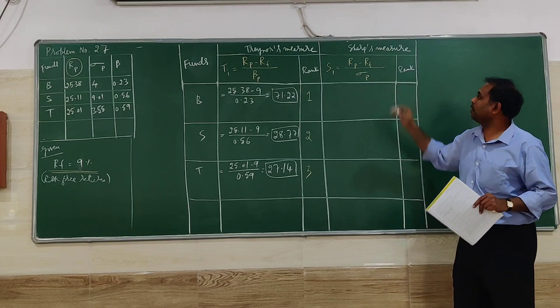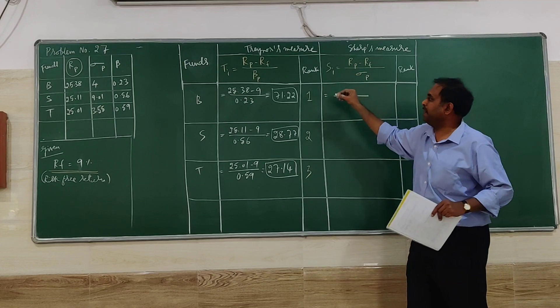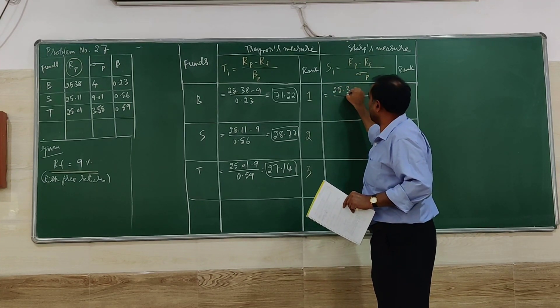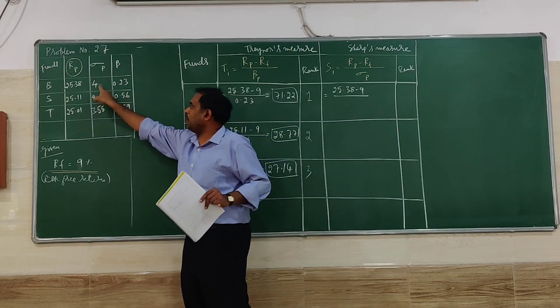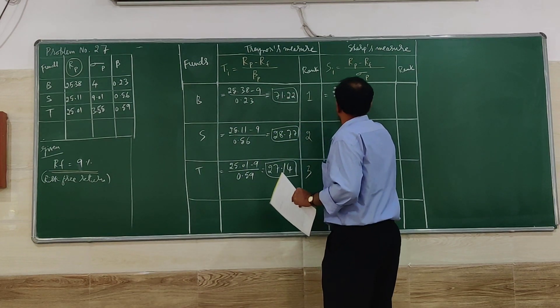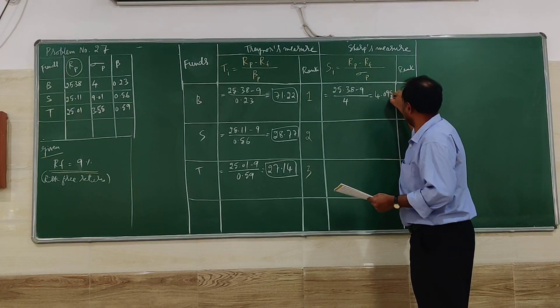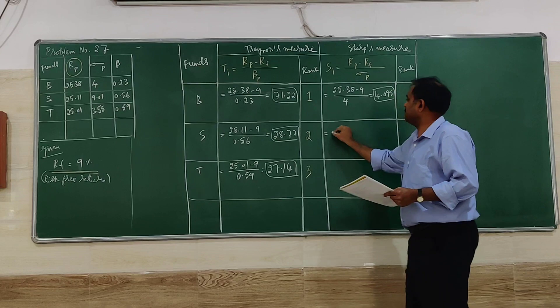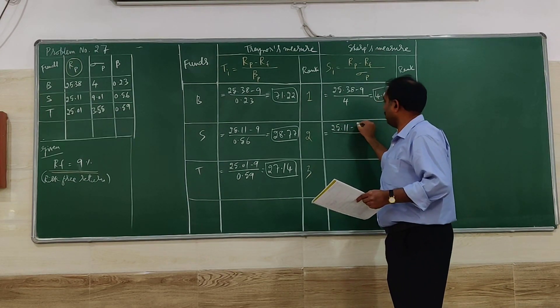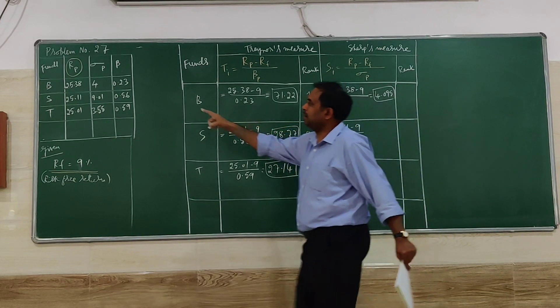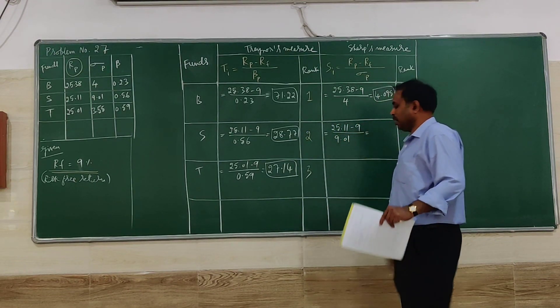Next, coming to the Sharpe measure. As I told you, the numerator remains the same in both formulas, but here we divide by standard deviation. Standard deviation of B is 4, so the calculation gives 4.095.